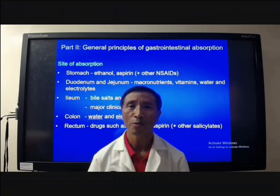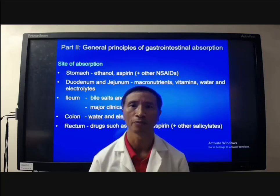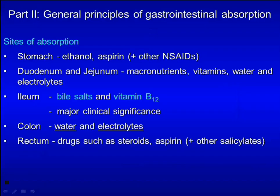Now let's move to part two: general principles of gastrointestinal absorption. Different nutrients and chemicals are absorbed in different sites. For example, the stomach absorbs ethanol and aspirin. The duodenum and jejunum absorb macronutrients, vitamins, water, and electrolytes. The ileum absorbs bile salts and vitamin B12, which has major clinical significance. The colon absorbs water and electrolytes, and the rectum absorbs steroids and aspirin.